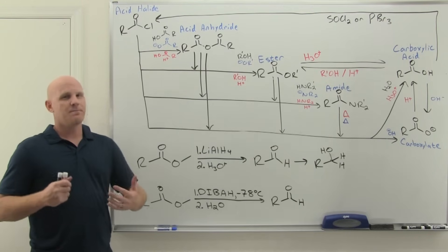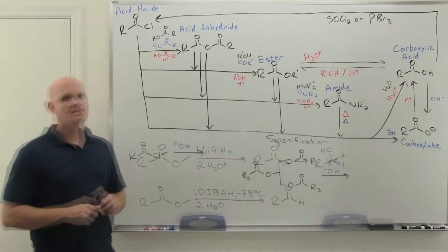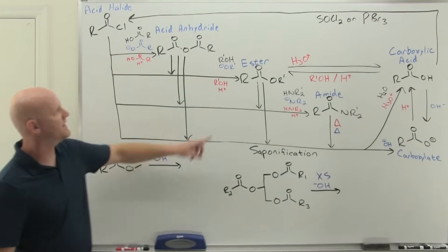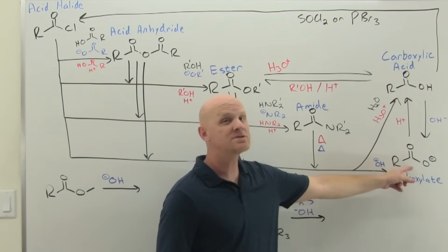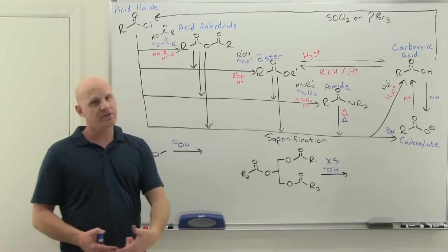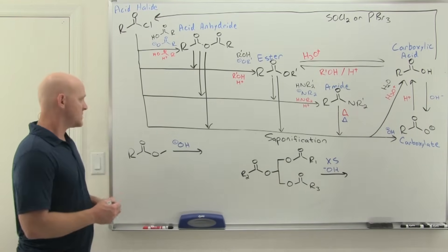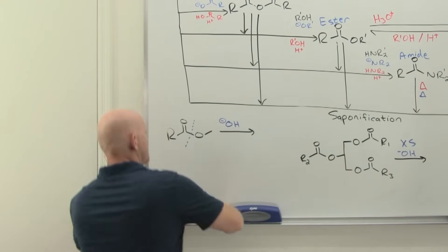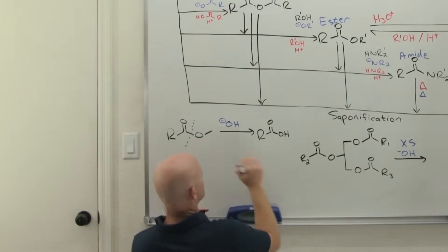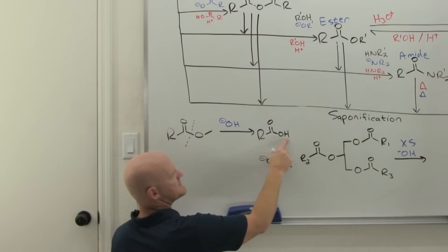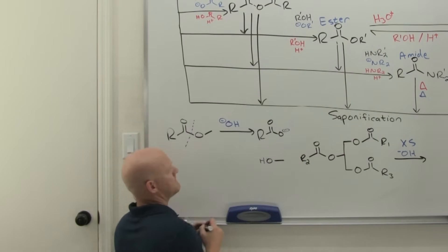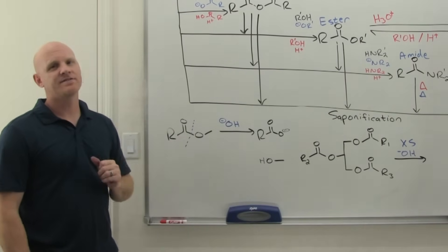Let's look at one last reaction with some biochemical context — saponification. If you take an ester and add hydroxide, you get the corresponding carboxylate. Saponification is the basic hydrolysis of an ester to produce a carboxylate and also a corresponding alcohol. We break the ester bond, hydroxide replaces the leaving group, and then the methoxide that forms deprotonates the carboxylic acid, giving a resonance-stabilized carboxylate anion.